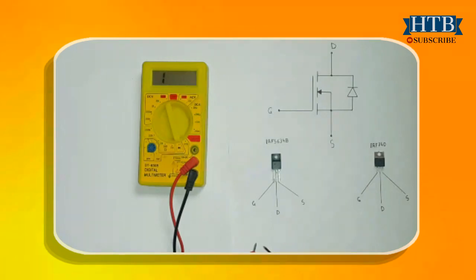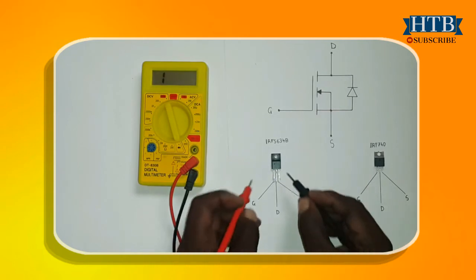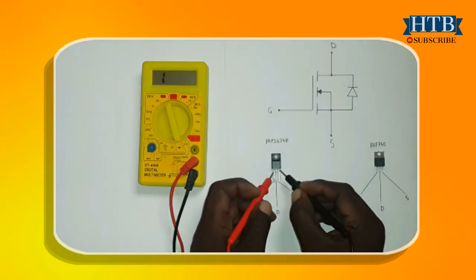A MOSFET acts as a small capacitor, hence you can charge and discharge it. To charge a MOSFET, briefly touch the gate with a positive lead while the negative lead is on the source.